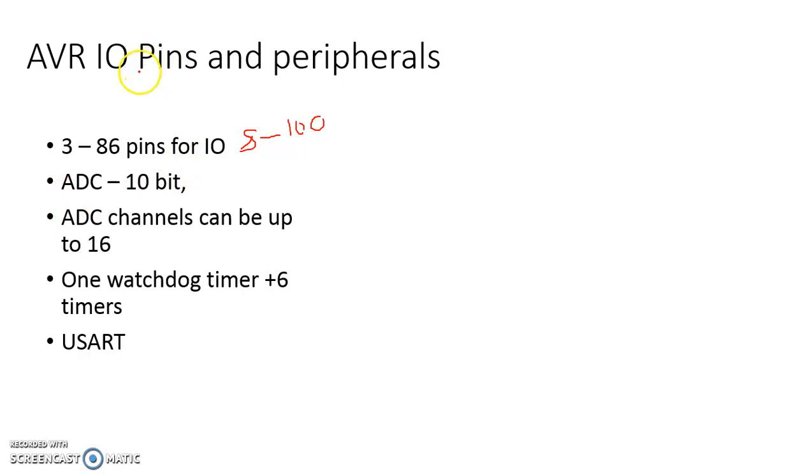For incorporating an input device, it is inevitable that there must be an analog to digital converter. AVR has an ADC in the same chip with a word length of 10 bit, and the number of channels that can be used for ADC can be up to 16.